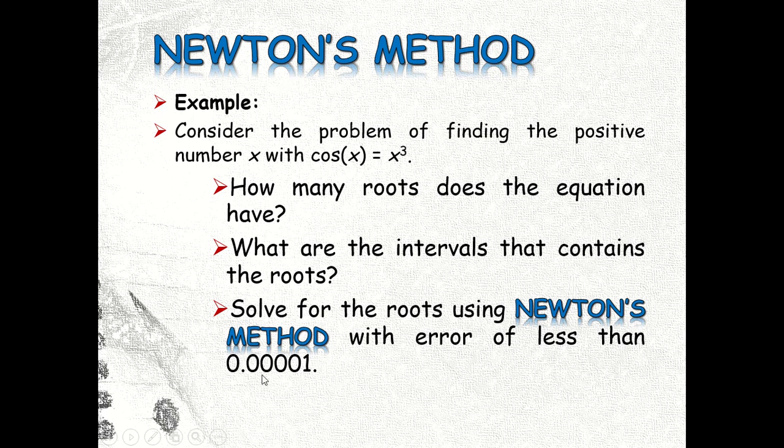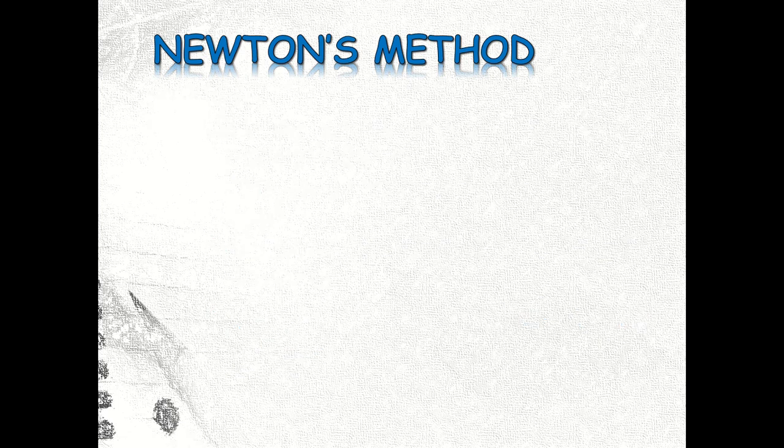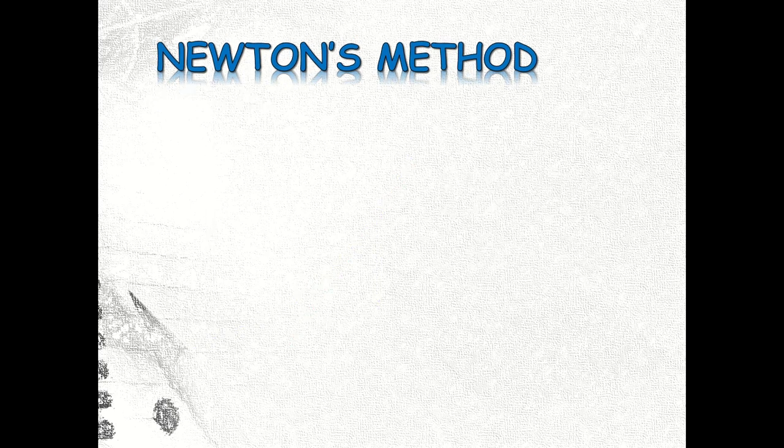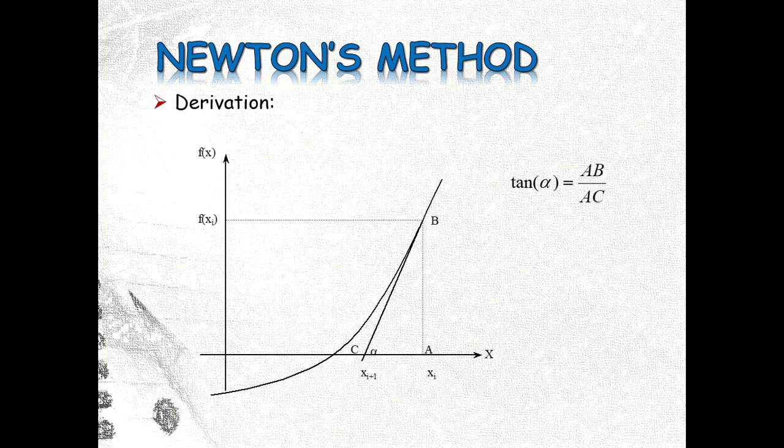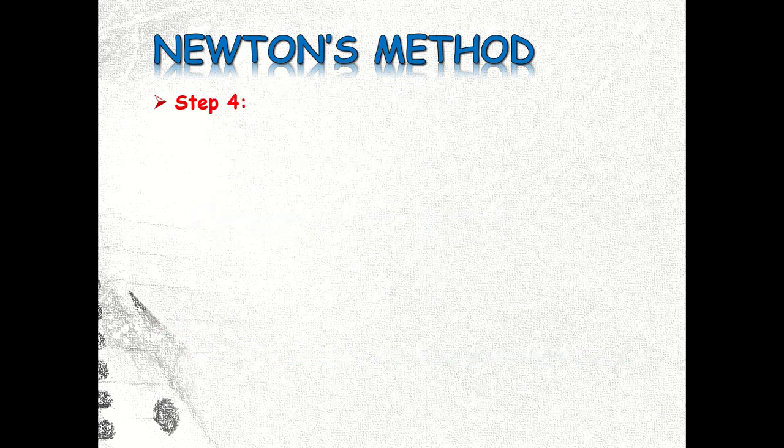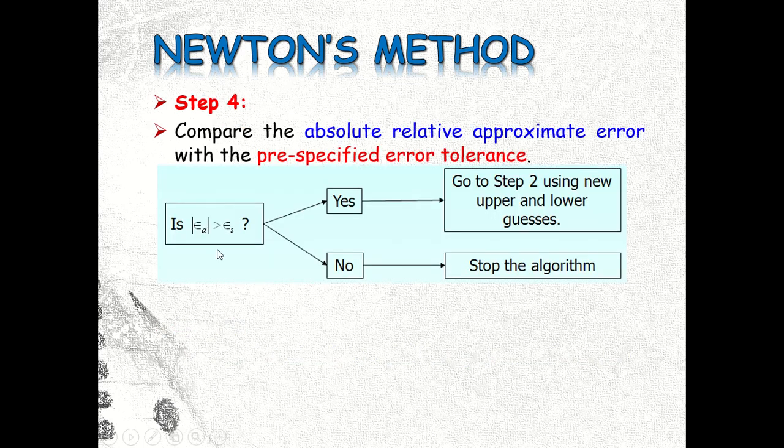Okay, so meaning this is our pre-specified error tolerance, which is the ES. So that's why in our iteration we have to find the value of the absolute relative approximate error and we have to compare that with ES.